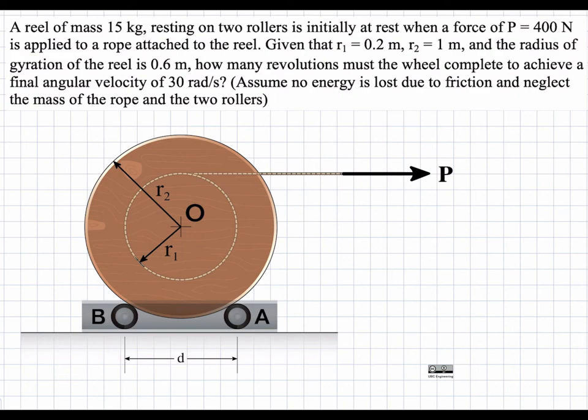In this problem we have a reel of mass 15 kilograms. It is resting on two rollers and initially at rest. We apply a force of 400 Newtons with a rope attached at r1, and given the radius of gyration, we are asked how many revolutions must the wheel complete to achieve a final angular velocity of 30 radians per second.